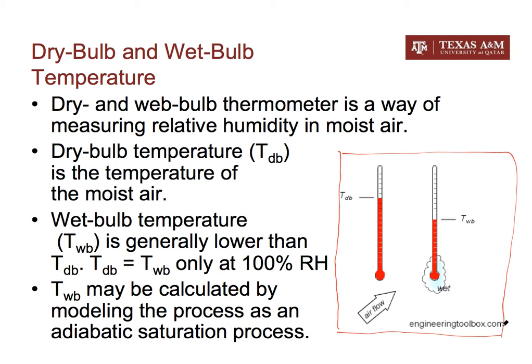On the left you have the dry bulb thermometer, and on the right you have the wet bulb thermometer. The wet bulb thermometer has its bulb wrapped in, for example, a cotton ball or a wick made of fibrous material that can absorb water. This wick is kept wet by soaking it in a small reservoir of water, and air is allowed to flow over the wet bulb thermometer.